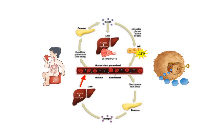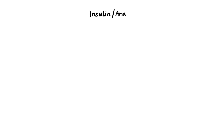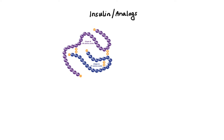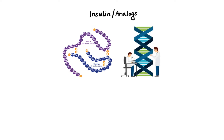Now let's talk about drugs used for diabetes. The first group of agents is insulin and its analogues. Human insulin can be reproduced by recombinant DNA technology using bacteria or yeast, and its amino acid sequence can also be altered to produce insulin analogues with different onset and duration of action. Because insulin is a polypeptide, it is susceptible to degradation in the gastrointestinal tract, and therefore it is typically administered by subcutaneous injection.